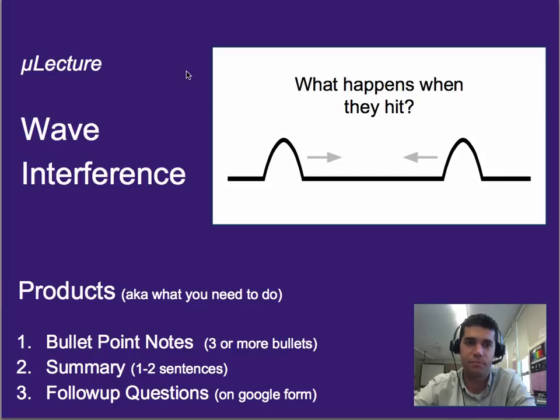Hi, I'm Ben Canning, and this micro lecture is on wave interference. So far we've talked about reflection and refraction. Reflection being the bouncing of a wave off of a surface or a barrier of some sort, and refraction being the bending of the wave path.